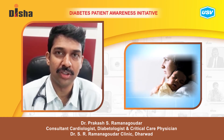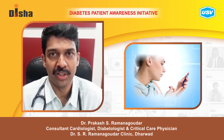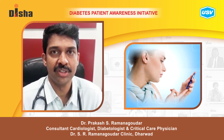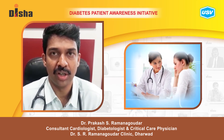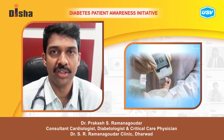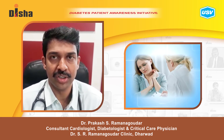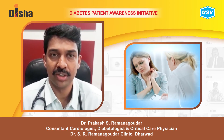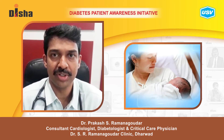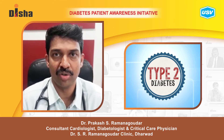Regarding postpartum care for diabetic mothers: once a diabetic or gestational diabetes mother delivers, we monitor sugars, stop all insulin as sugars return to normal, and recheck blood sugars at 6 weeks to confirm they are within normal range. We monitor gestational diabetes mothers every 6 months, as gestational diabetes is a warning sign that they may develop type 2 diabetes in the future.